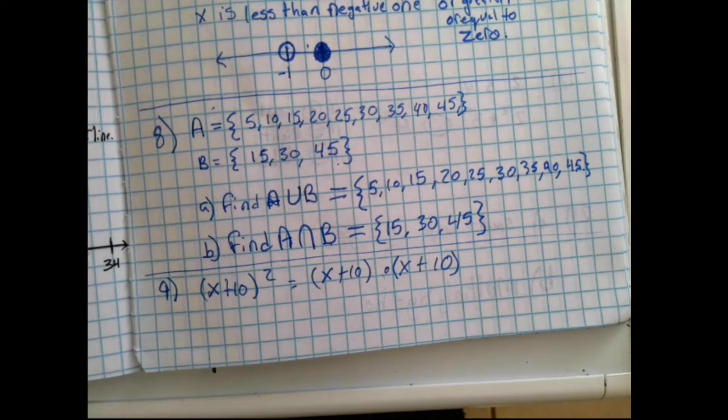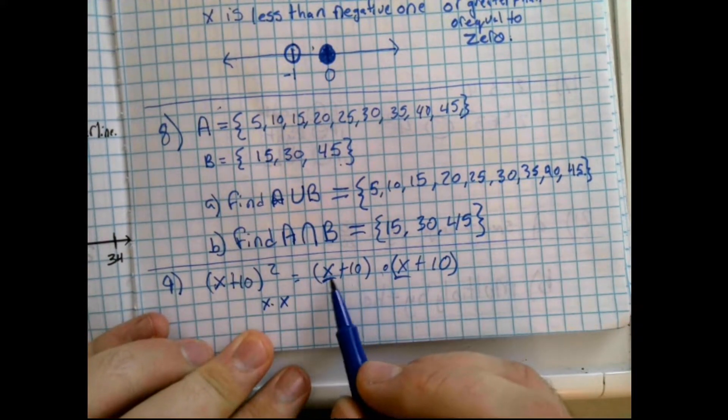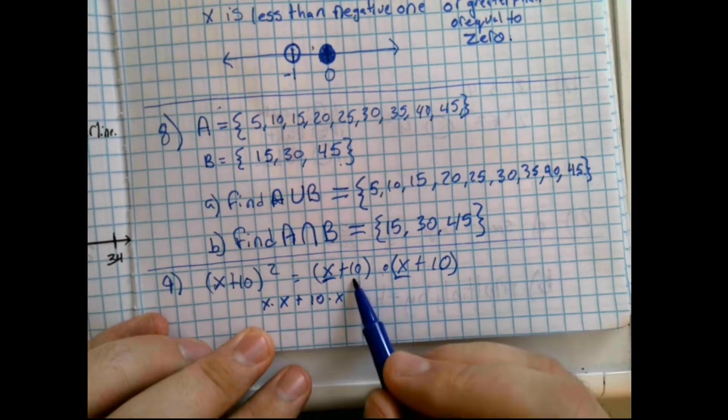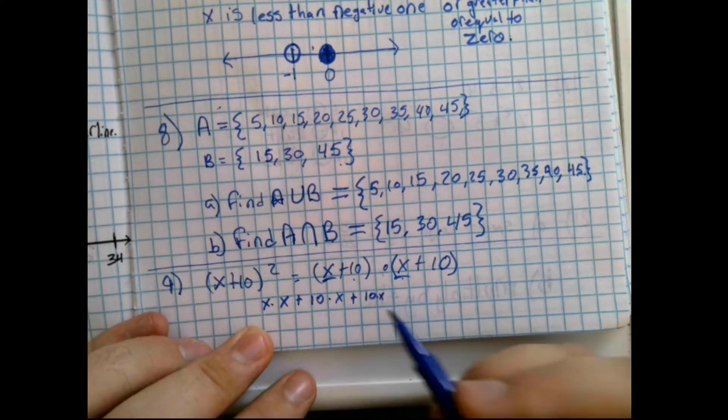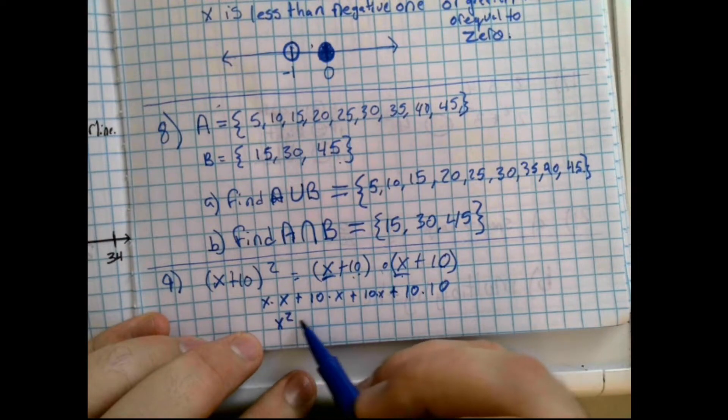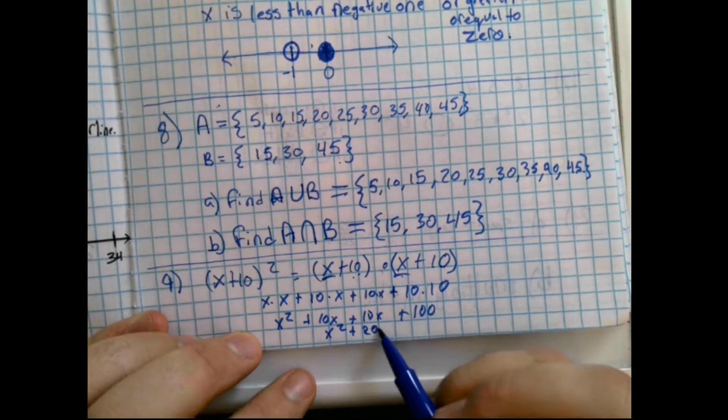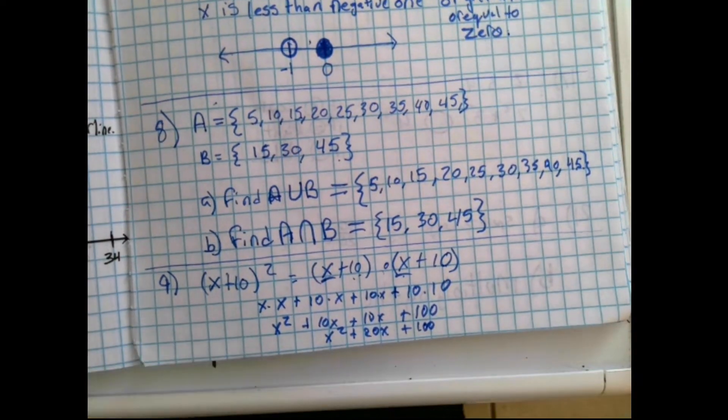The next set of star problems is asking us to expand using binomial expansion. I'm going to choose to use the FOIL method for mine. If you prefer the box method, you can use the box method, that's okay too. Now, the first one is x plus 10 squared. x plus 10 times x plus 10 is the same as x plus 10 squared. So our first is our x and our x, we have x times x. Our outside is x and 10, so plus 10 times x. Our inside is 10 and x, plus 10 times x. And our last are our 10 and our 10. This will give us x squared plus 10x plus 10x plus 100, or x squared plus 20x plus 100.